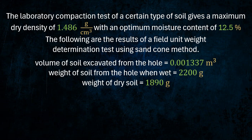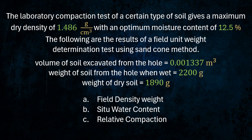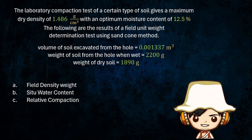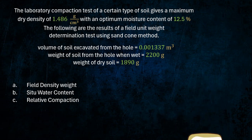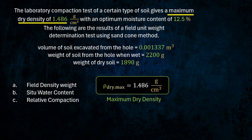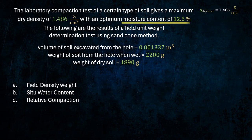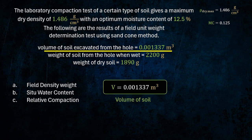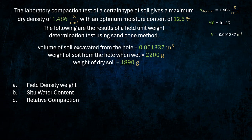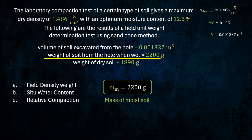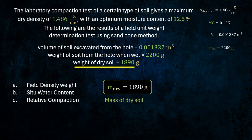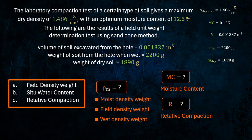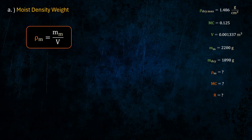The table includes: maximum dry density, moisture content, volume of soil, mass of moist soil, mass of dry soil, and moist density.